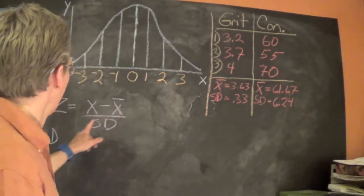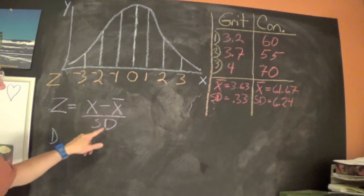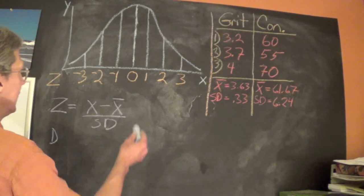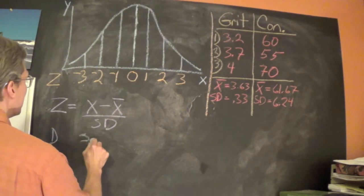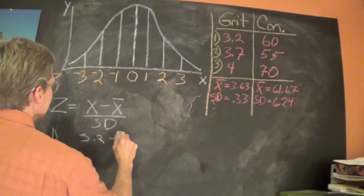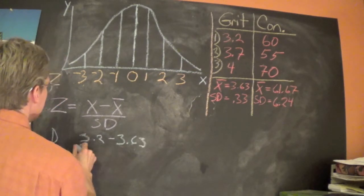To calculate the z-score, we will take the score minus the mean divided by the standard deviation. So let's do that for student 1 here. What we would do is we'll take the score 3.2 minus the mean 3.63.